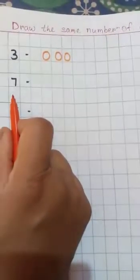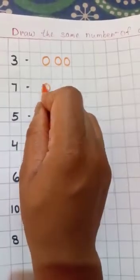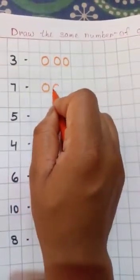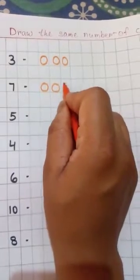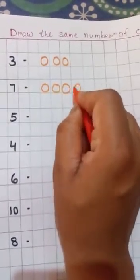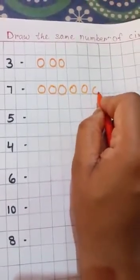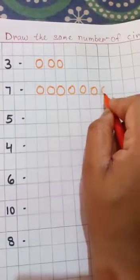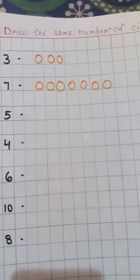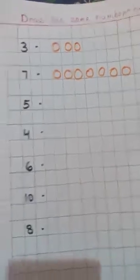Now, 7. So we draw 7 circles. 1, 2, 3, 4, 5, 6, 7. You are enjoying na? Good.